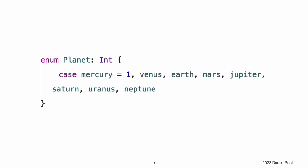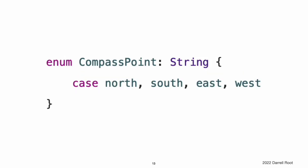When you're working with enumerations that store integer or string raw values, you don't have to explicitly assign a raw value for each case. When you don't, Swift automatically assigns the values for you. For example, when integers are used for raw values, the implicit value for each case is one more than the previous case. If the first case does not have a value set, its value is zero. The enumeration below is a refinement of the earlier Planet enumeration, with integer raw values to represent each planet's order from the sun. In the example, planet.mercury has an implicit raw value of 1, planet.venus has an implicit raw value of 2, and so on. When strings are used for raw values, the implicit value for each case is the text of that case's name. In the example, compassPoint.south has an implicit raw value of "south", and so on.